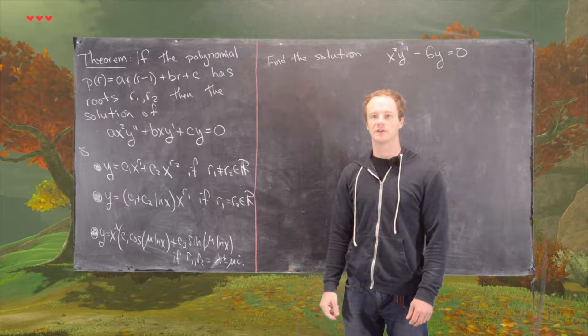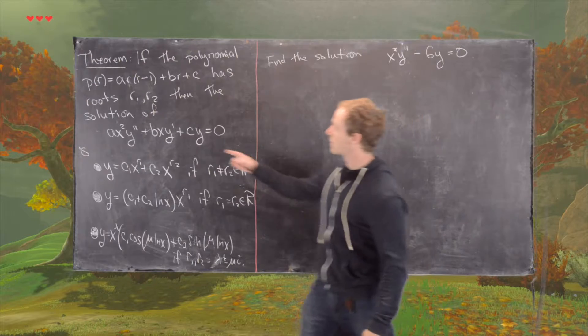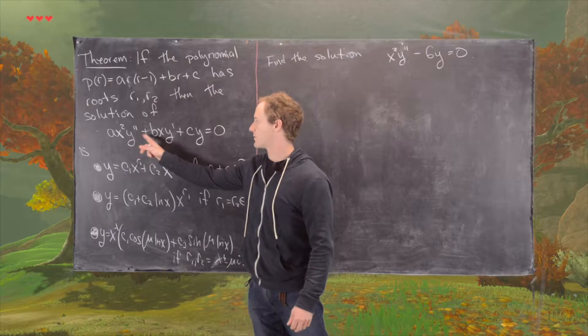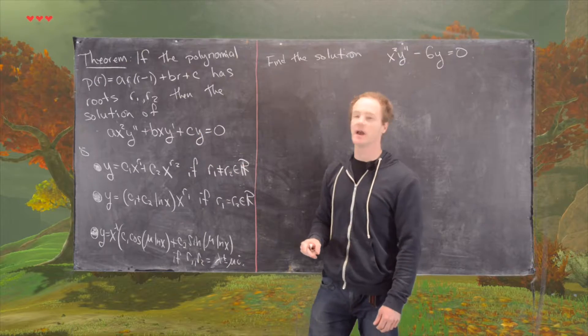In this video we're going to solve a differential equation known as an Euler equation. Those are of the form ax squared y double prime plus bxy prime plus cy equals zero.